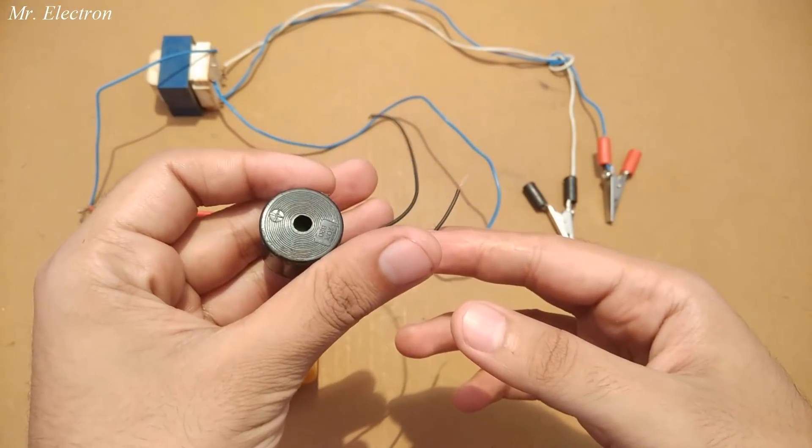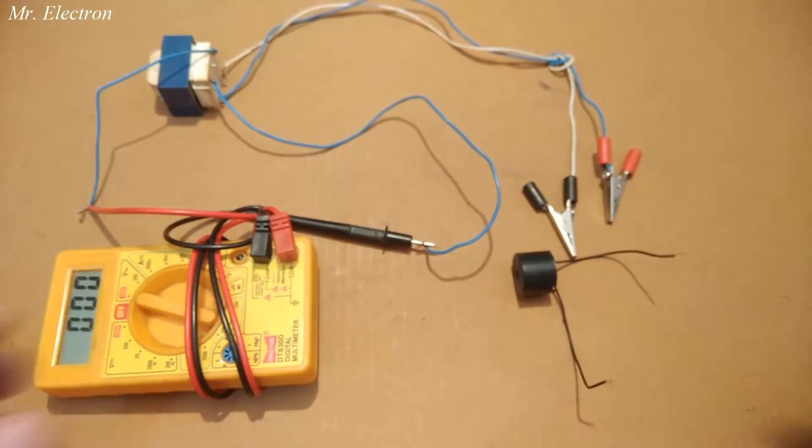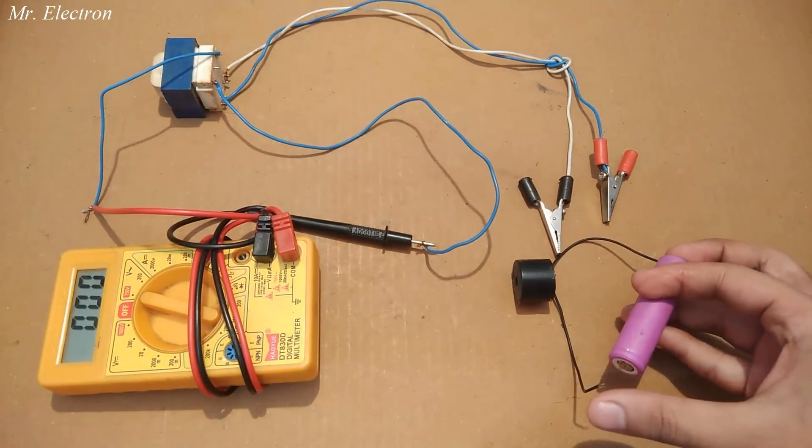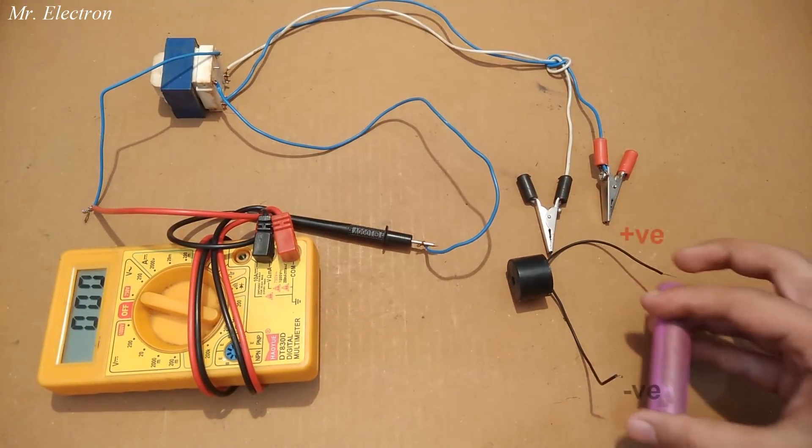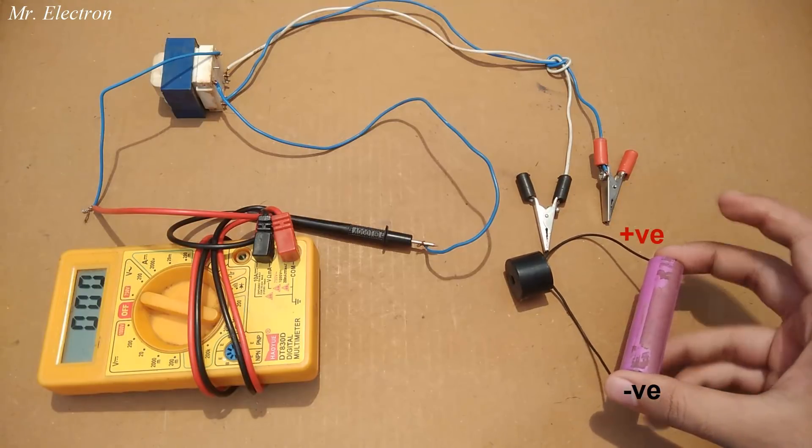This is a 12V buzzer from a UPS and it works on DC. First I am going to do the polarity check to determine which side of this buzzer is the positive and which one is the negative.